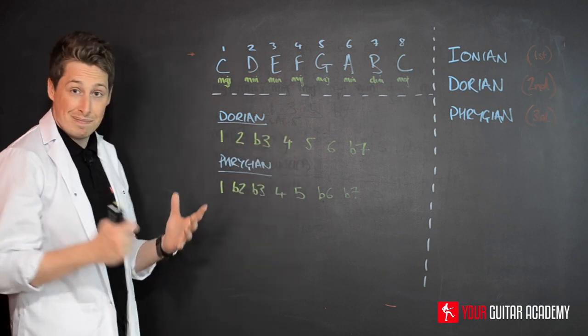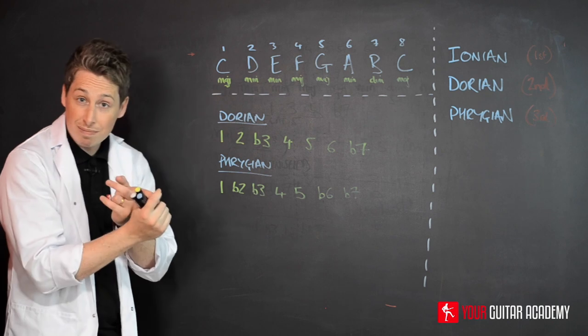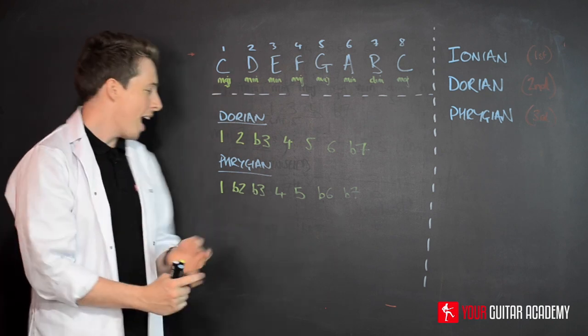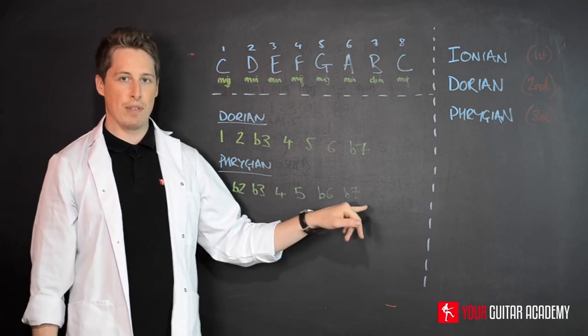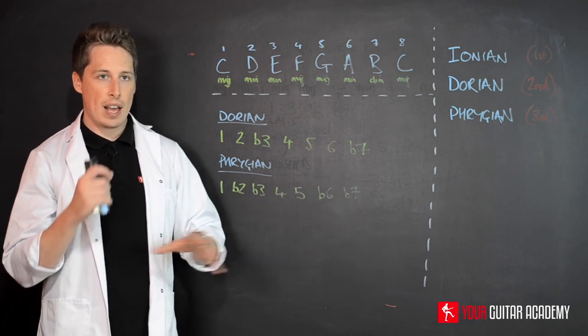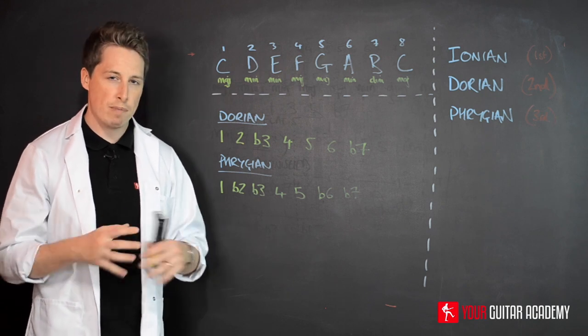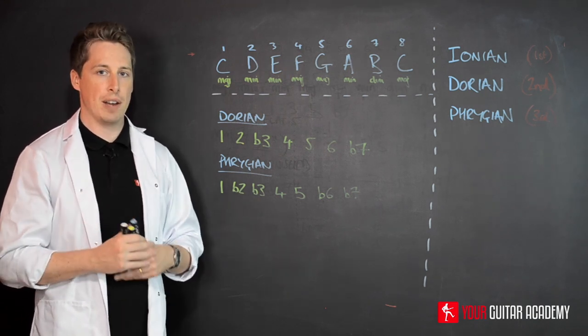So Phrygian - it's a minor, it's got a crazy name, it's the third degree of the major scale, and this is the formula for it. Try and get all of that information in your head, and we'll carry on with one more mode in this section next time.